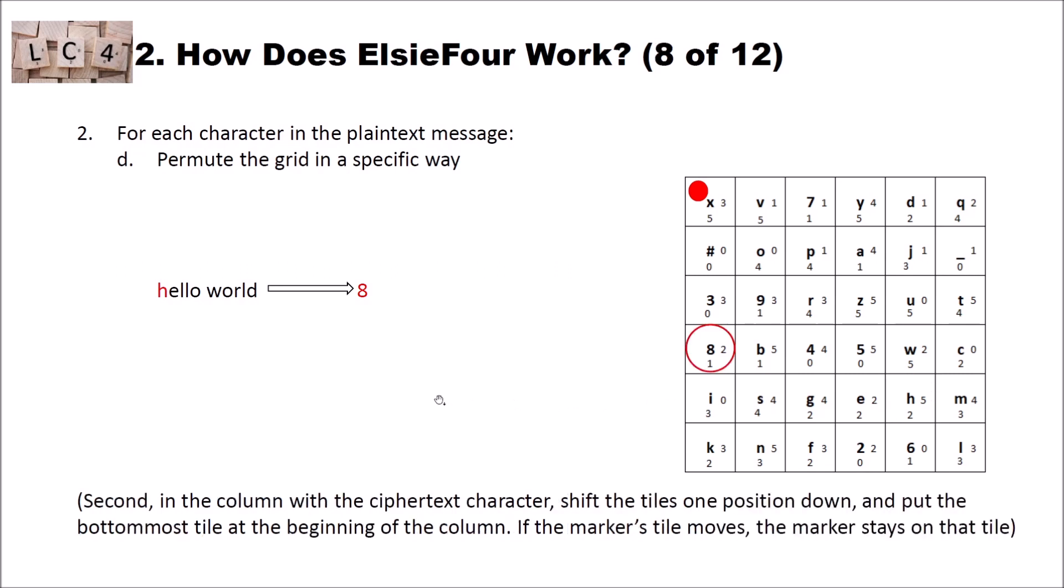In the next step, we have the column with the ciphertext character. And we have to shift the tiles one position down and put the bottom most tile at the beginning of the column. If the marker tile moves, the marker stays on that tile. Here is our ciphertext character in that column. So we have to move the column one to the bottom. So the k will go to the top and you will see that the marker also moves. The k moved to the top and we moved the remaining part of the column one to the bottom.